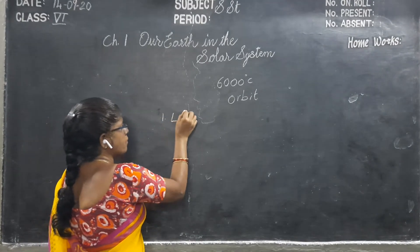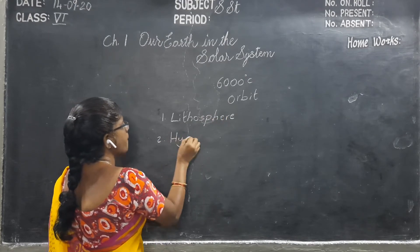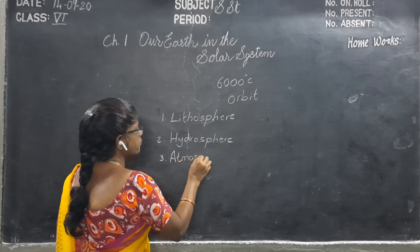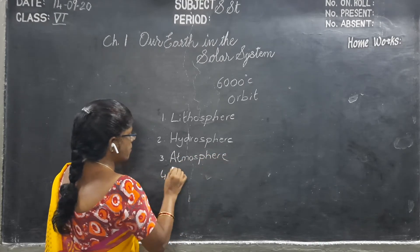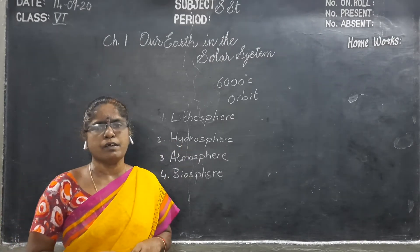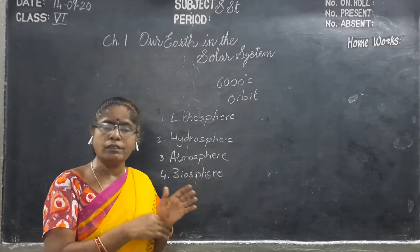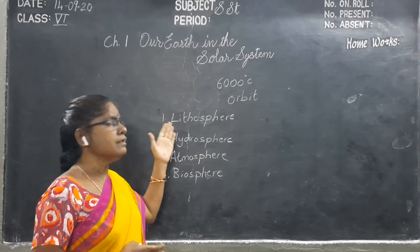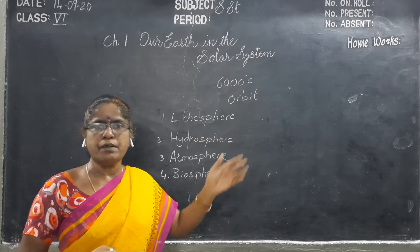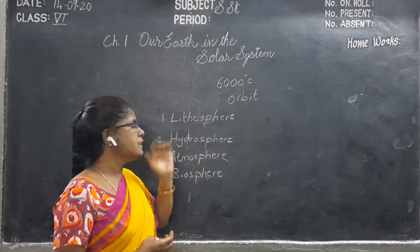These components are called the natural realms of the Earth, and they are 4. The first one is lithosphere. The lithosphere consists of rocks and soil, which is the uppermost layer — the hard outer layer of the Earth. In this zone we have different landforms: continents, oceans, plains, plateaus, mountains — all come under the lithosphere.